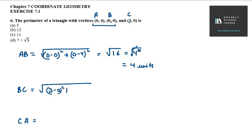3 minus 0 whole square plus 0 minus 0 whole square. So, 3 squared is 9. I will keep 3 squared as 3 squared only. Square root and under root gets cancelled out. So you get 3 units.